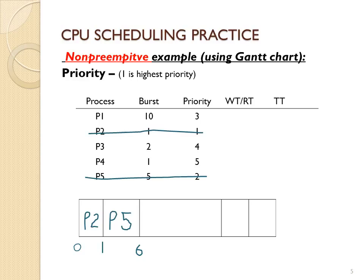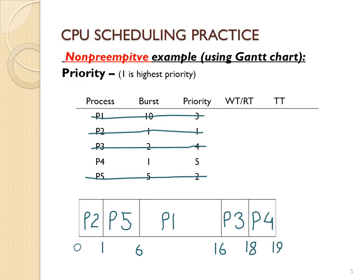Now the current time is six. The next one to go will be P1 until time 16, then the current time is 16 and we will run the next priority which is P3 until time 18, followed by P4 until time 19. Since we have 100% CPU utilization, if you add up all the bursts it should equal 19. Since there is no preemption or extra waiting time, the wait time and the response time will be the same — all processes only waited once and the assumption was that they all arrived at time zero.